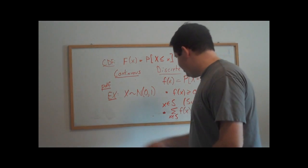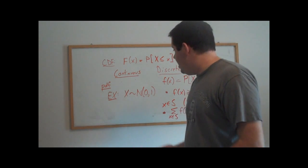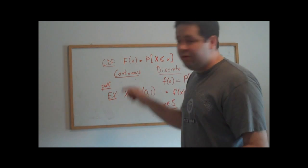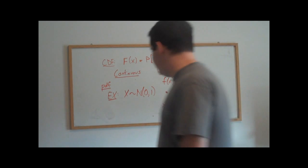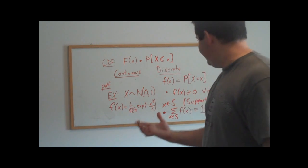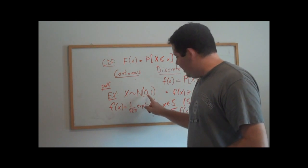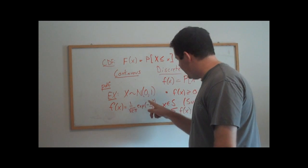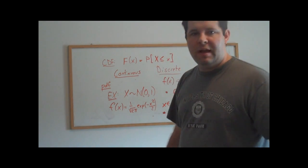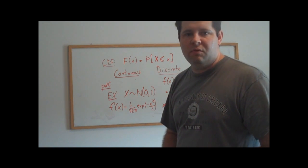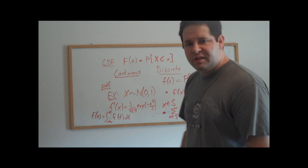So this is very standard notation. We say that x is distributed normal zero, one. And what that means is that x is a very particular continuous random variable. It's a continuous random variable with this density. This is the density of what we would call the normal distribution, the standard normal distribution. That is, a normal distribution has a mean of zero and a variance of one. And it turns out that if you integrate this from negative infinity to infinity, that's going to equal one.